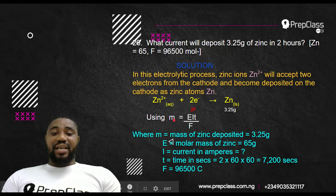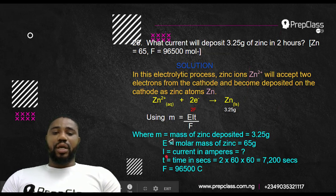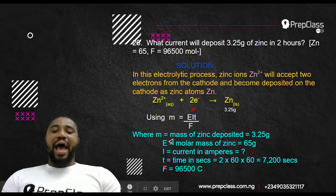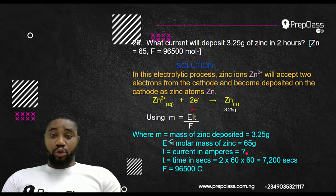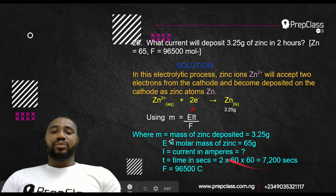Using the statement formula that says M equals EIT all over Faraday, where M equals mass of zinc deposited which is 3.25 grams, E equals molar mass of zinc which is 65 grams, I is the current in amperes, it's unknown because they told us to find the current. T is the time in seconds. This time must be in seconds. They give us in hours. You have to convert it to seconds. It becomes 2 times 60 minutes times 60 seconds, which gives us 7,200 seconds. F is 96,500 coulombs.